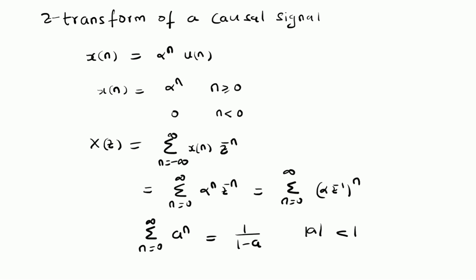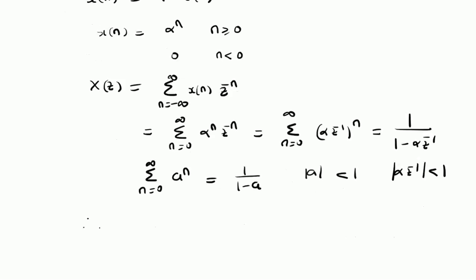By equating α·z^(−1) to a, we can write the Z-transform as 1/(1 − α·z^(−1)), provided the absolute value of α·z^(−1) is less than one. Therefore, the Z-transform of x(n) = α^n · u(n) is X(z) = 1/(1 − α·z^(−1)), where the absolute value of z is always greater than the absolute value of α.